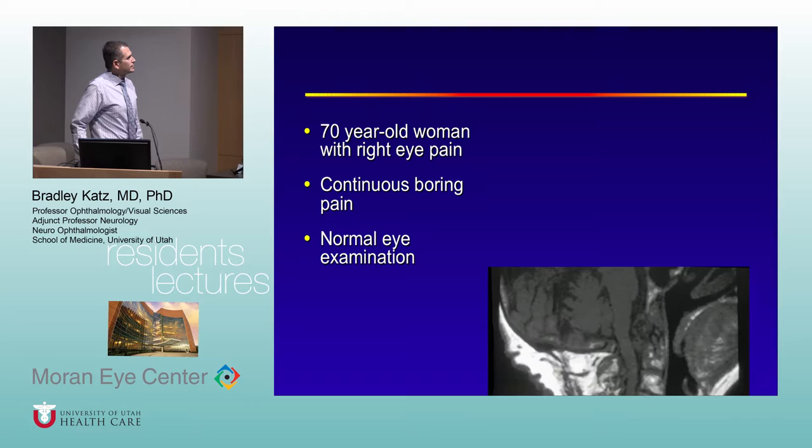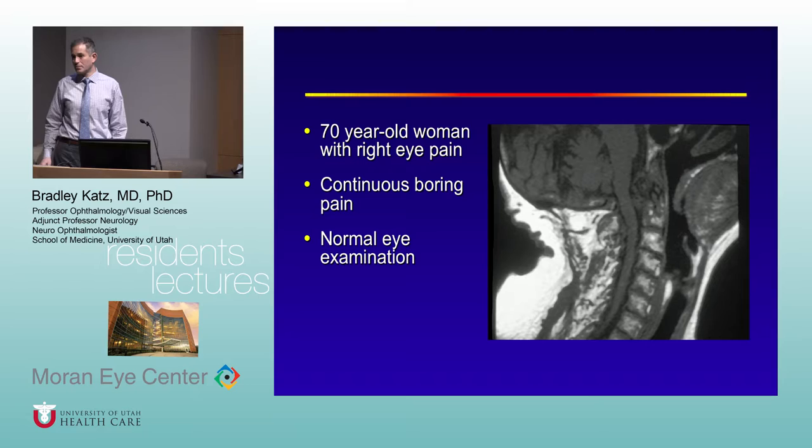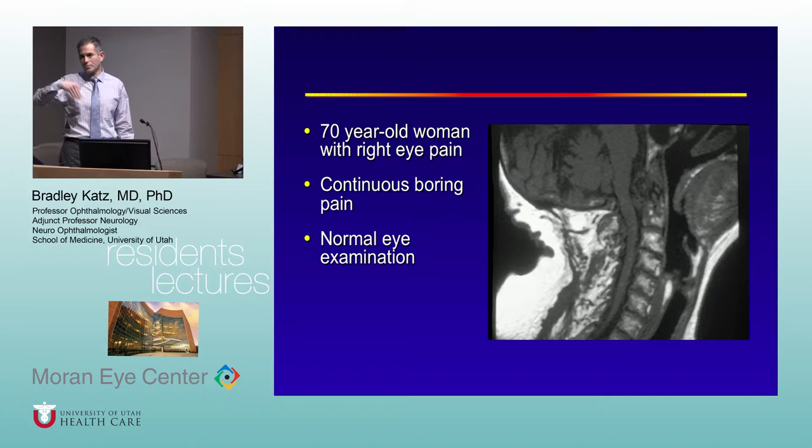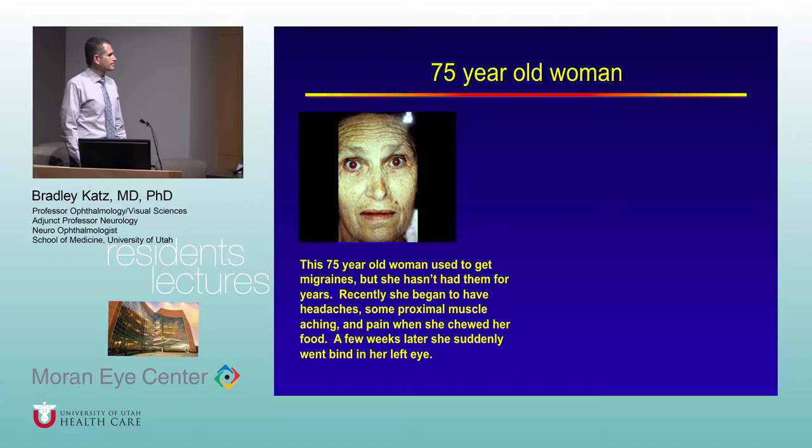Another example: metastatic disease to the vertebrae can present as eye pain — probably through the same mechanism of irritation of the caudal part of the trigeminal nucleus.